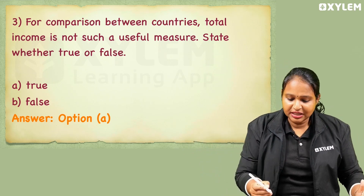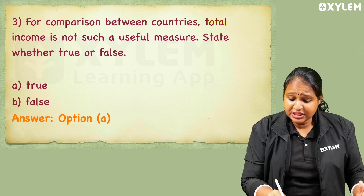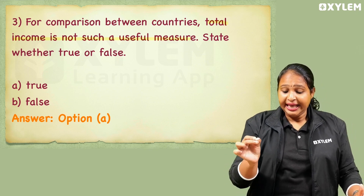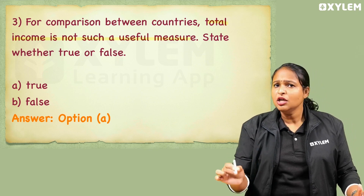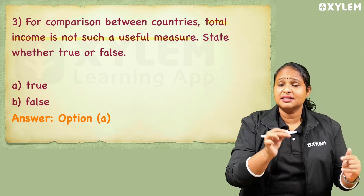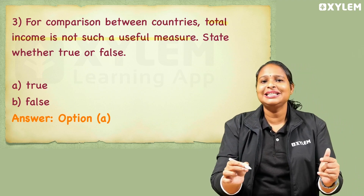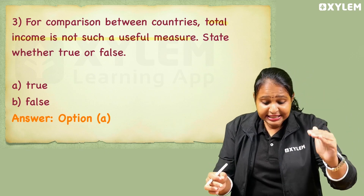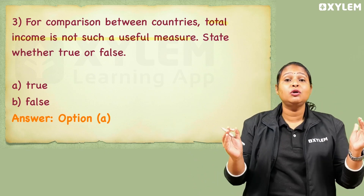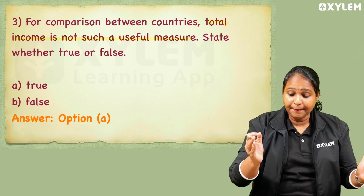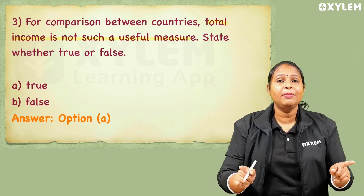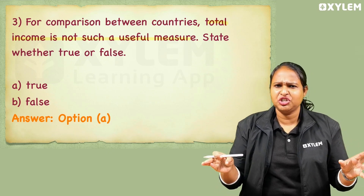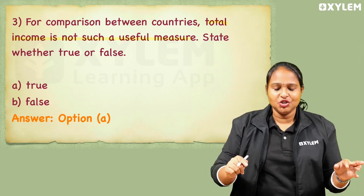What is the statement? Total income is not such a useful measure. What does it mean for comparison between countries? Total income is not such a useful measure — it's not even like as far.